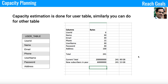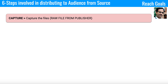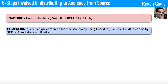Now we'll talk about one of the key components: how audio files are distributed from the source to audiences across the globe. This involves six steps. The first step is capture — we store all raw audio files into a storage location. For example, in an AWS-based architecture we store them in an S3 bucket.